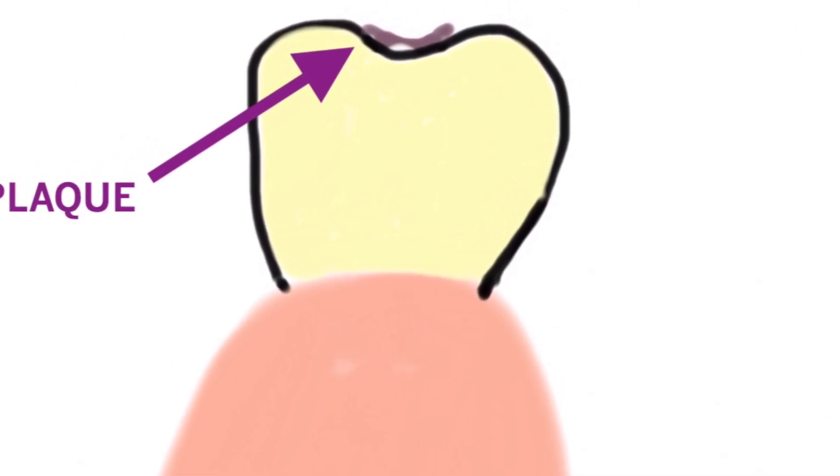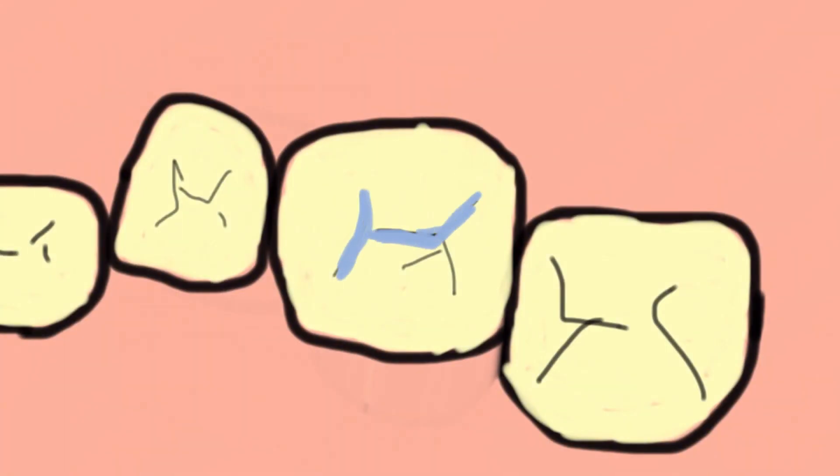But sometimes we have to do a little bit more because the grooves are deeper. In this instance, we just clean it out and put what we call a sealant in to block the plaque getting that deep. It looks like this on the top of the tooth.